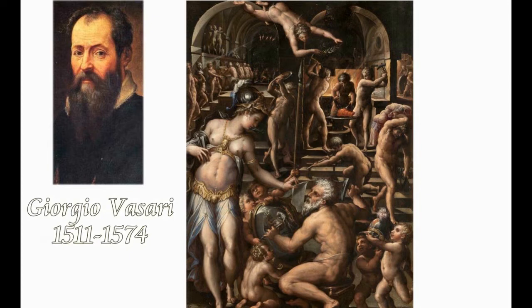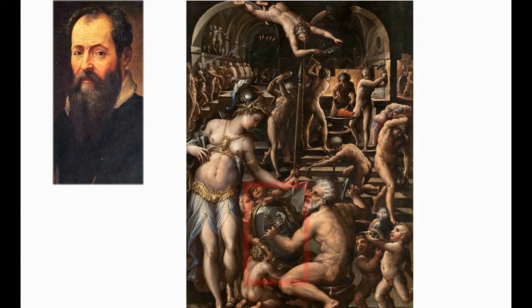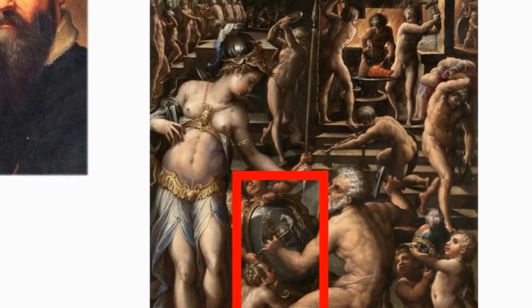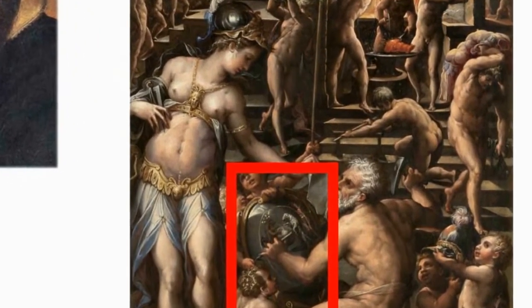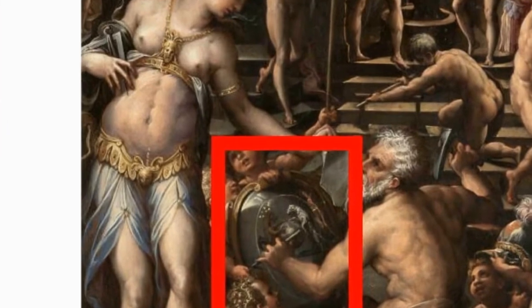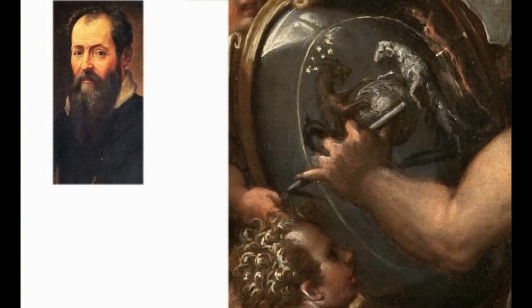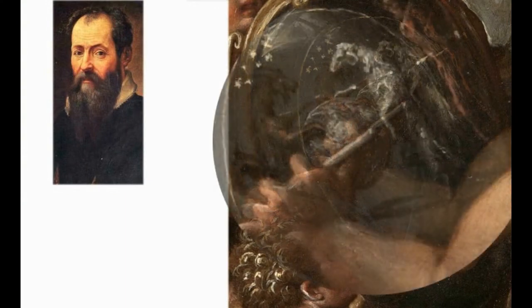日本では悪魔教として知られているBaphometですが、本当にそうでしょうか。そのBaphometが、16世紀のルネッサンスの時代に描かれた絵の中に出てきました。これは、ジオリジオ・バザーリの描いた絵です。この赤い枠で囲った部分に注意してください。ここに縦のようなものが表現されています。この絵の中に描かれているものを拡大して調べてみます。